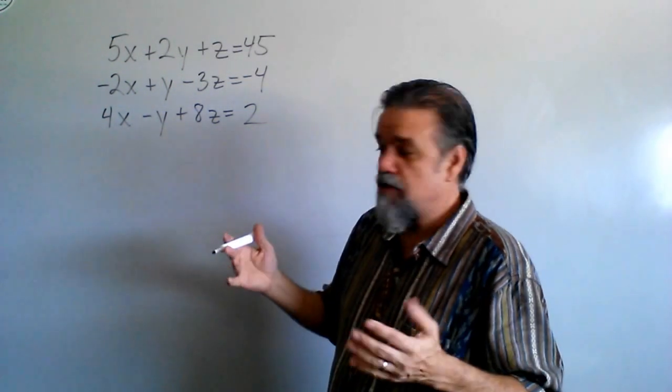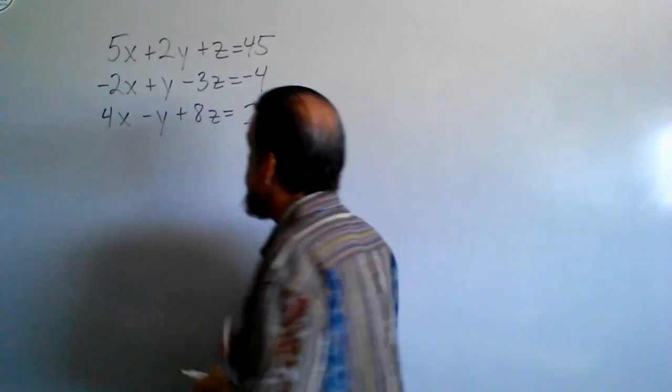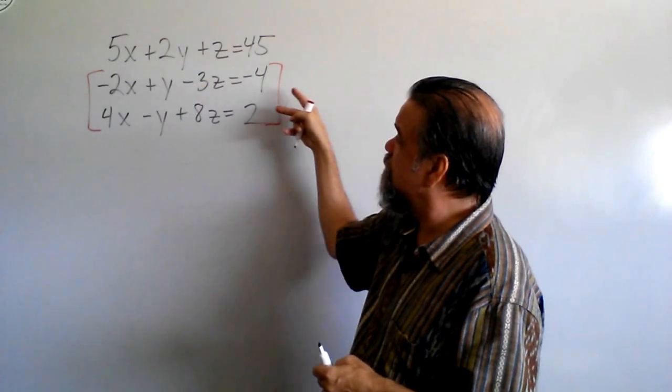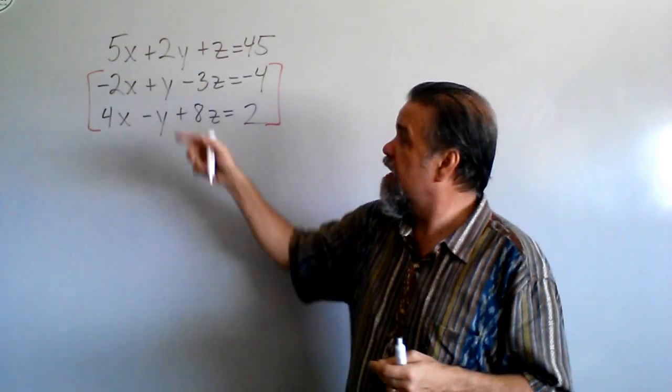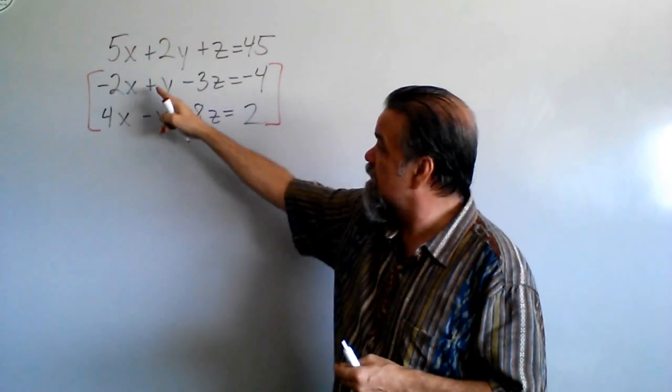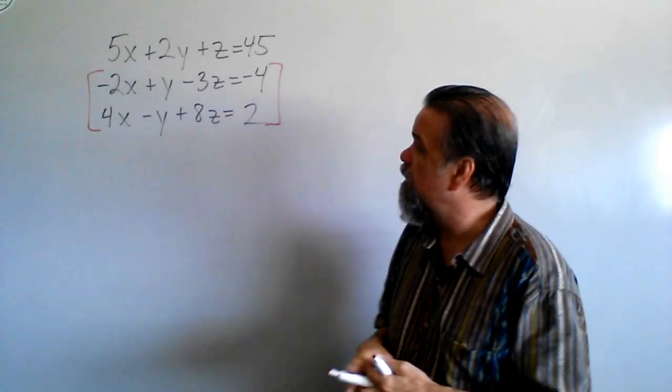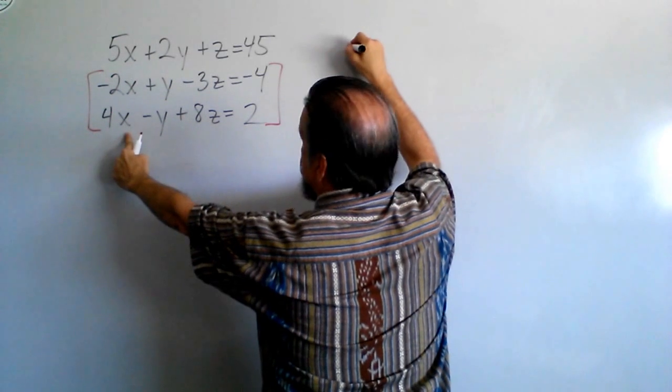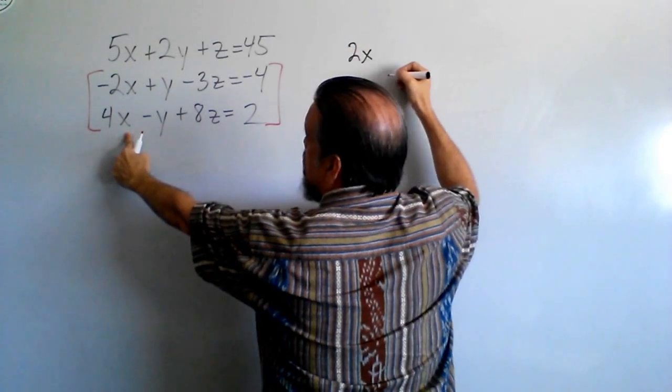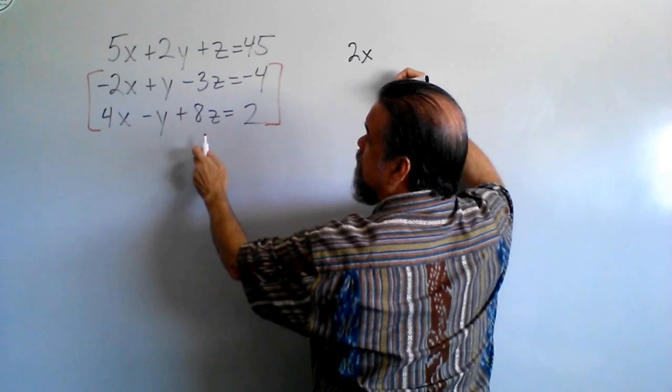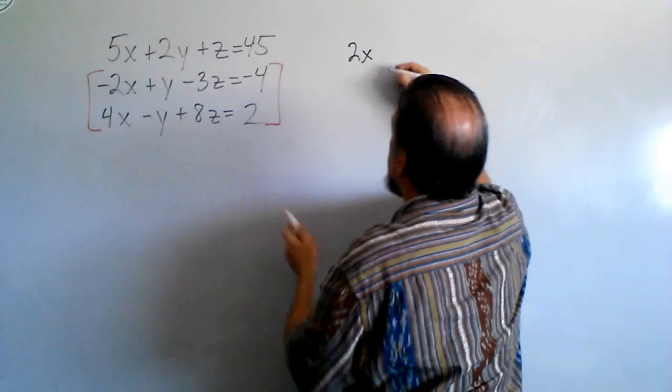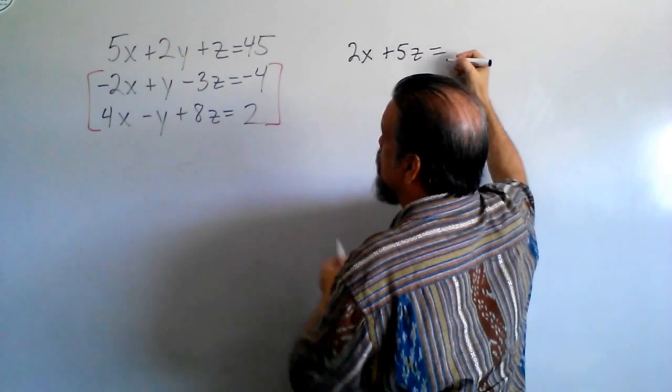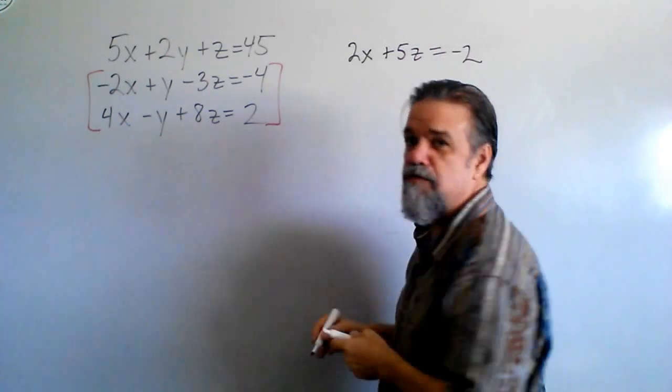So, first off, I'm just going to take these two right here, and I'm going to say, I'm going to combine those two. I don't even have to multiply either equation by anything because I have a positive y and a negative y. All I have to do is just add them up. And what do I get? Negative 2x plus 4x is 2x. The y's eliminate each other. And then I have negative 3z plus 8z, that's going to be plus 5z equals negative 4 plus 2 is negative 2.